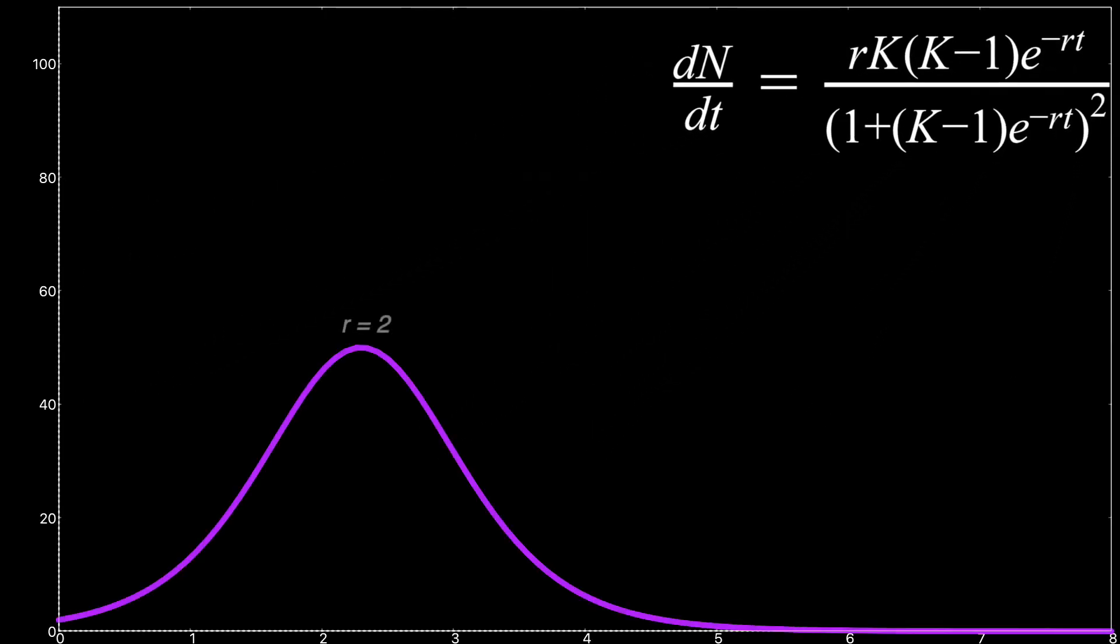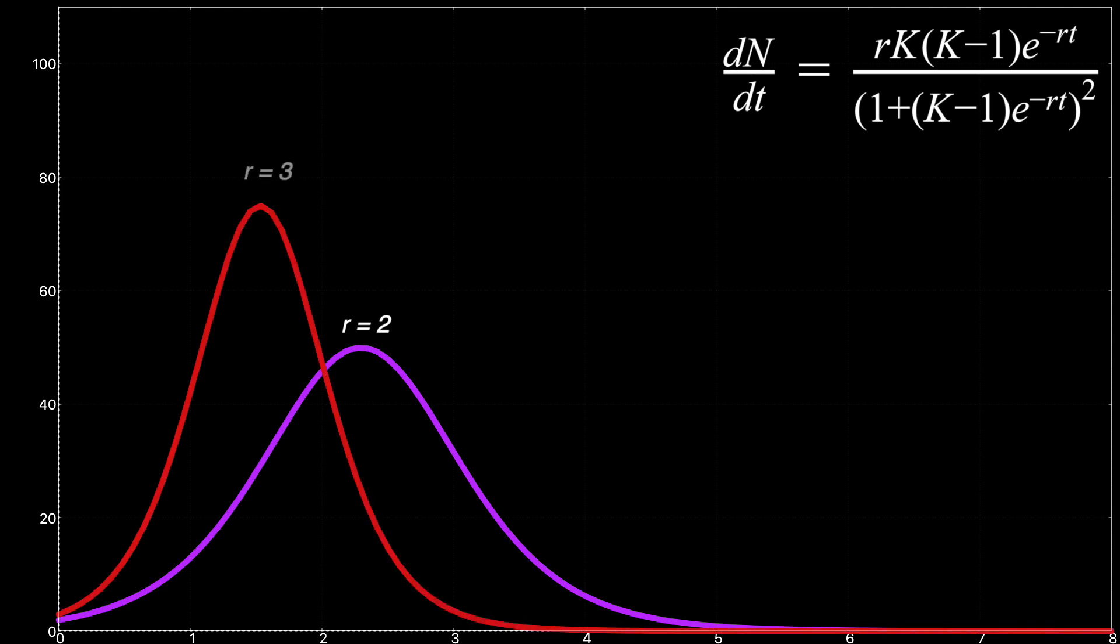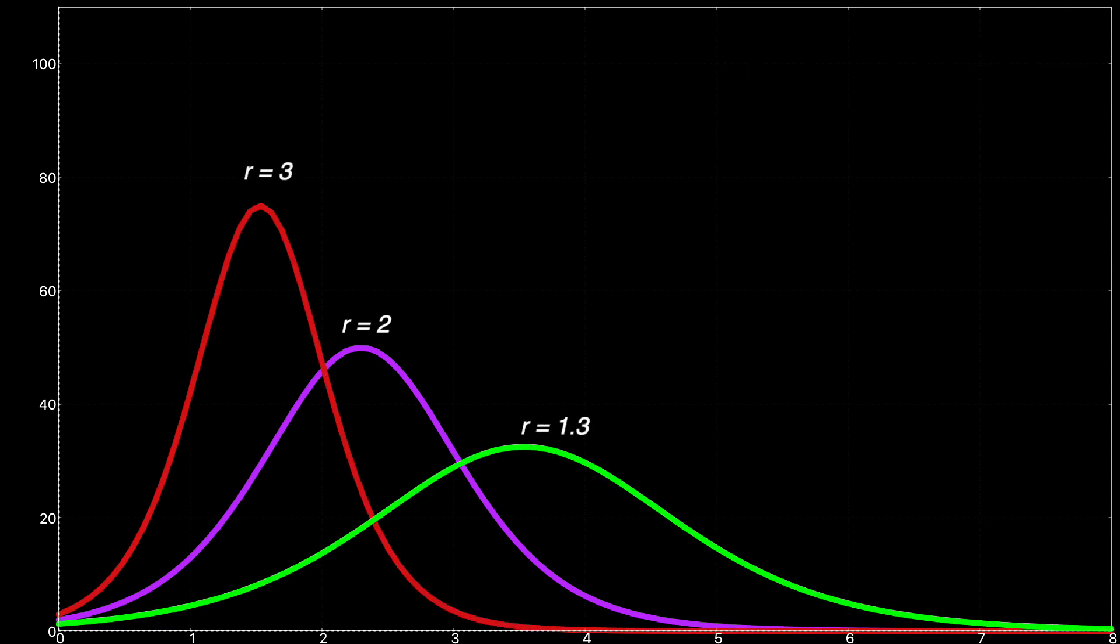Now, if we plot the derivative for different rates, we see that higher rates produce steep spikes, while lower rates produce shallower spikes but longer periods of infection. The problem with steep spikes is that they can outstrip treatment resources, as we have been seeing in the current pandemic.